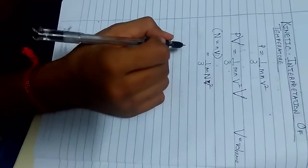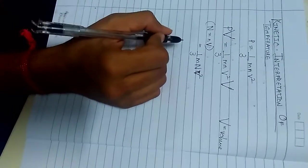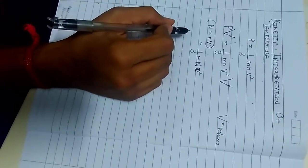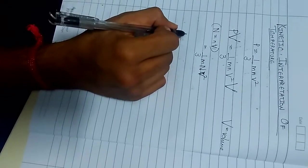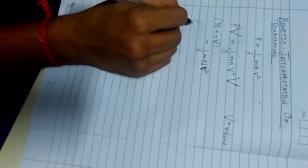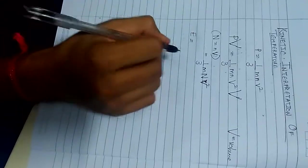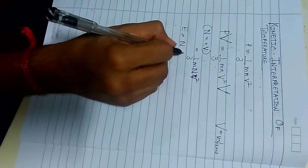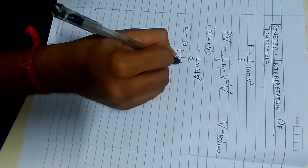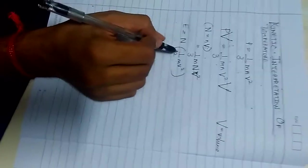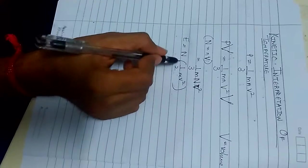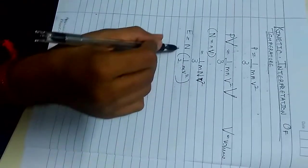Now we know that internal energy of an ideal gas is purely kinetic. We can write that internal energy E is equal to n number of molecules into half mv square. This is the total energy occupied by the gas molecules.